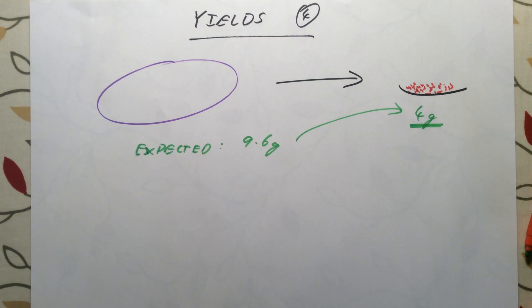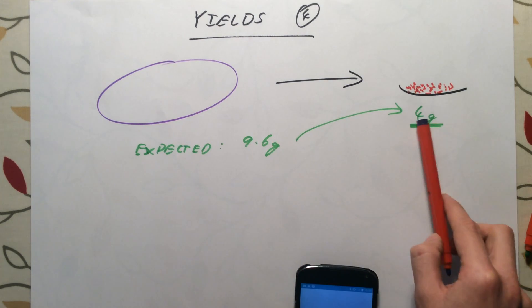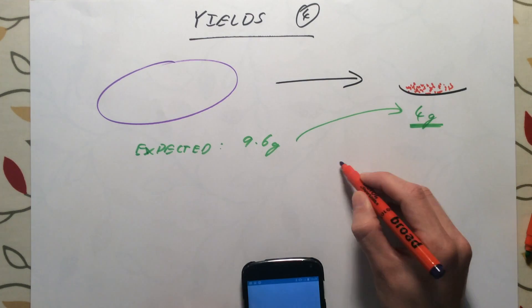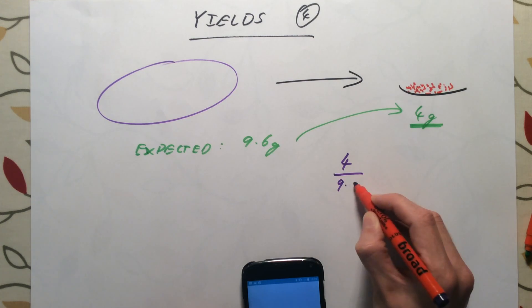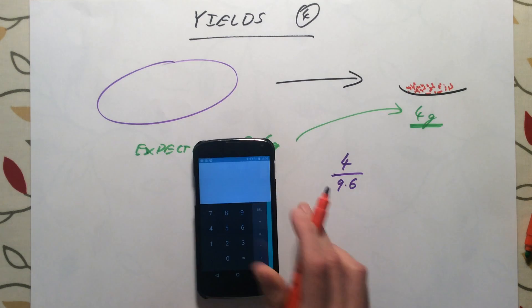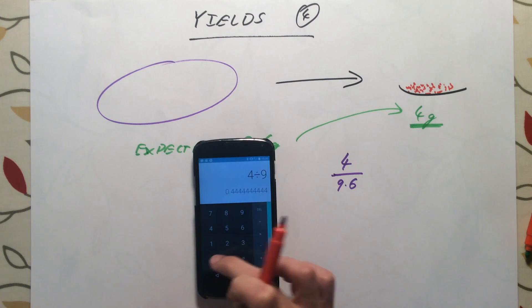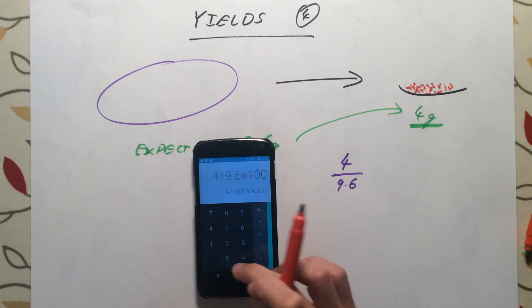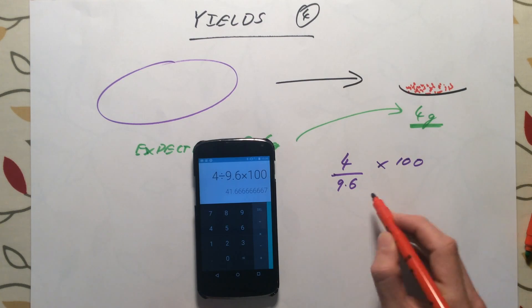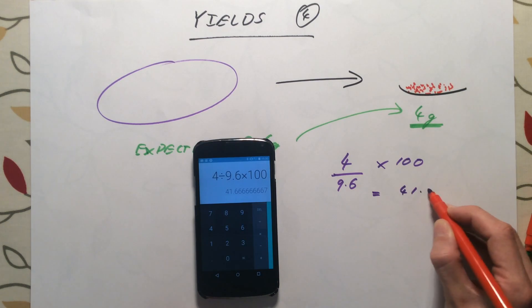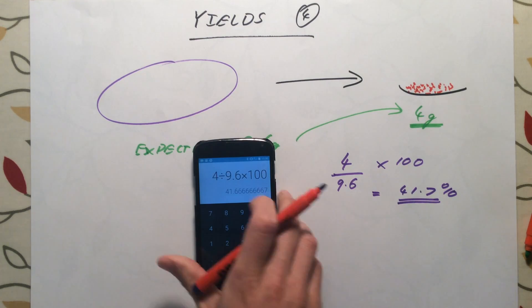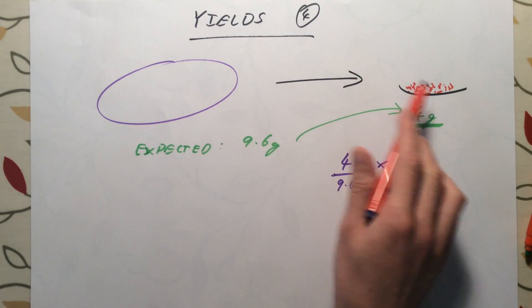The percentage yield is simply the percentage that we've made compared to the hypothetical or the expected amount. In this case to work out the percentage yield we simply do 4 divided by 9.6 which gives us it as a decimal. To get that as a percentage we simply times our answer by 100. The percentage yield in this reaction is 41.7%.